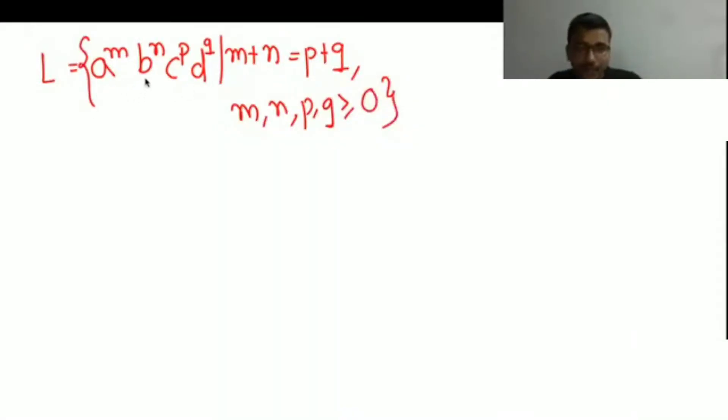It is saying that the number of A and B, the sum of A and B should be equal to sum of C and Q. Now, it is greater than equal to 0, so it can even start with anything. Here, it is now not required that always A and D will first come. It can even start with BC also.